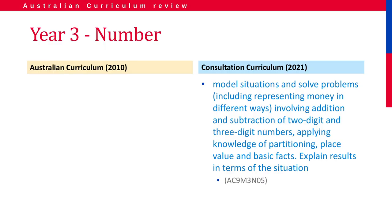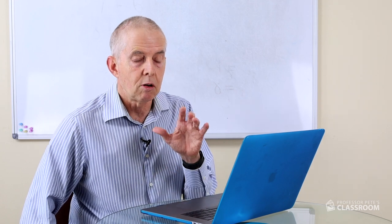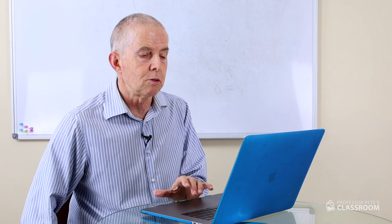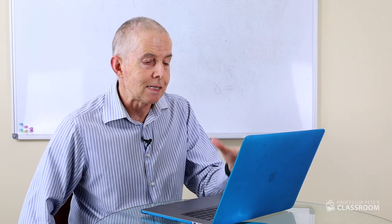The fourth number content descriptor is about modeling and representing unit fractions — recognize and use different models to represent unit fractions and their multiples. Combine fractions with the same denominator to complete the whole using part-whole understanding. The fifth content descriptor has no equivalent in the old curriculum — it's brand new. It says model situations and solve problems, including representing money in different ways, involving addition and subtraction of two and three digit numbers, applying number partitioning, place value and basic facts, and explain results in terms of the situation. I really like this content descriptor — it's got lots of detail, specifies the numbers, and gives lots of verbs to explain the processes students will go through.